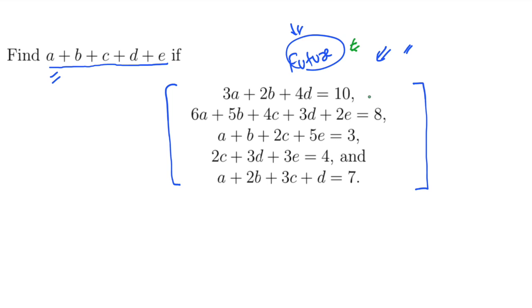But here we need not to find A, B, C, D, E. We need to find another equation. We have to find the equation with the help of all 3 values. If you look at this equation, equation 1, equation 2, equation 3, equation 4 and equation 5.